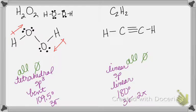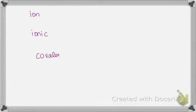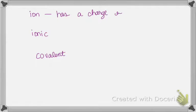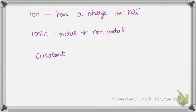Now let's tackle the last box. There are two questions: first, is the overall structure an ion? Is it ionic or is it covalent? You know it's an ion because an ion has a charge. For example, NO₃⁻ with a minus one charge — that's an ion. You know it's ionic if it's a metal and a nonmetal, like sodium chloride or copper 2 nitrate. You know it's covalent because it's made up entirely of nonmetals.